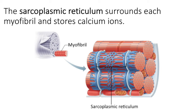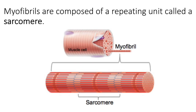The sarcoplasmic reticulum's job is to store calcium ions. When the cell is at rest — not being excited by the nervous system and not contracting — calcium is stored inside of the sarcoplasmic reticulum. This will be important in our step-by-step process that leads to muscle contraction once the cell is excited.